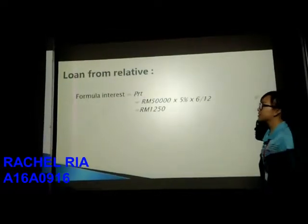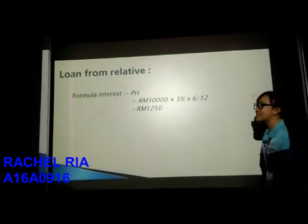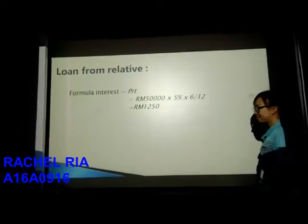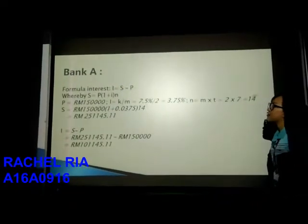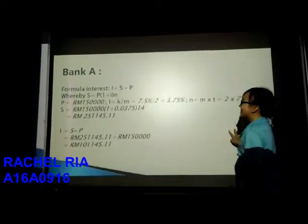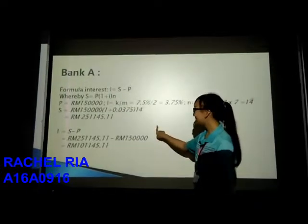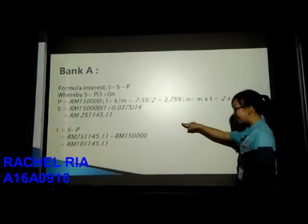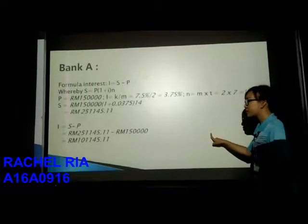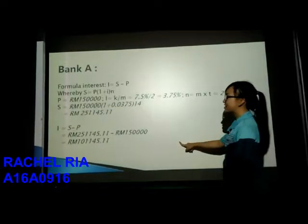To find the interest for the long-term loan relative, the formula is I equals present value times interest rate times time, which equals RM1,250. For Bank A, to find the future value, the formula is S equals P times open bracket 1 plus i close bracket to the power of N. We got S equals RM250,145.11. To find the amount of interest, I equals S minus P, giving RM1,145.11.